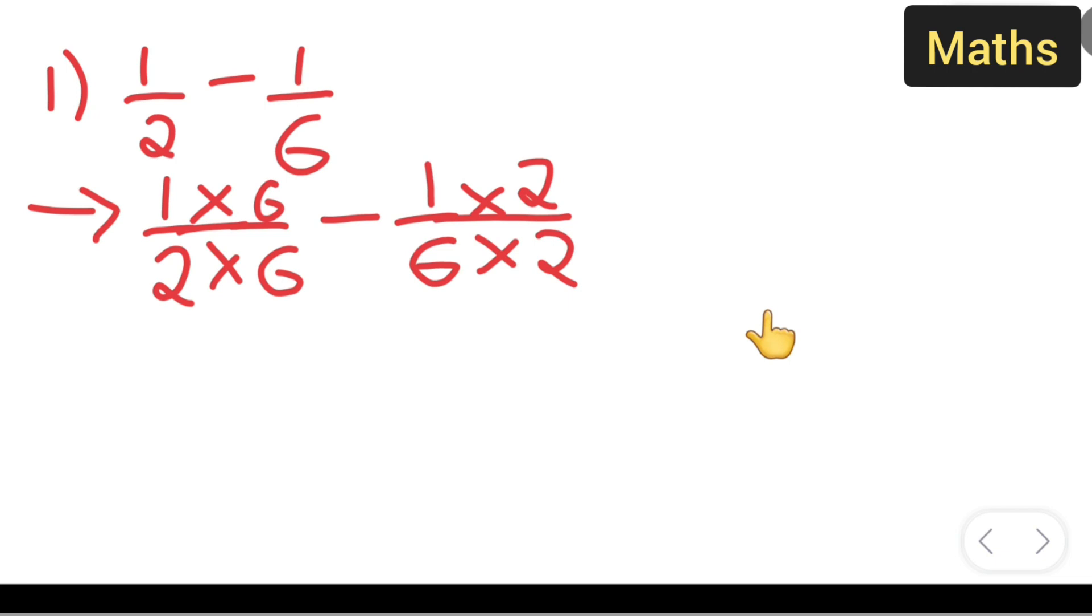Now 6 ones are 6 upon, now what you all are going to get here? 6 ones are 6 upon, 2 6s are 12, right? Write is equal to 6 upon 12. Then put minus, minus what is there? 2 ones are 2 upon 12.